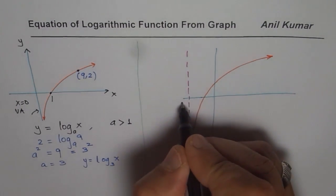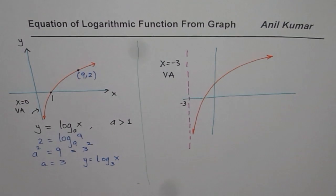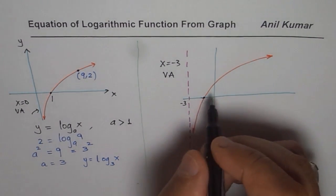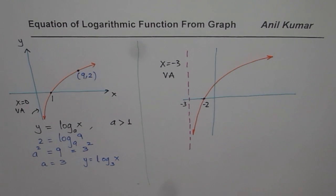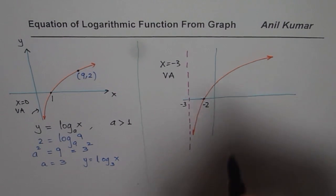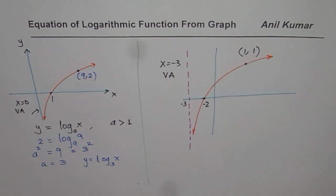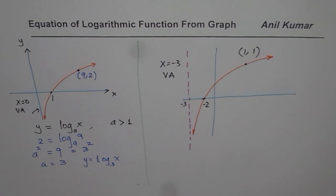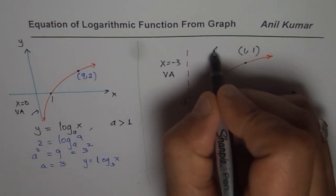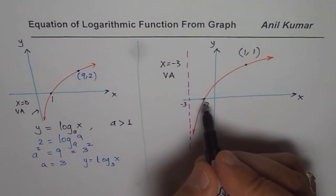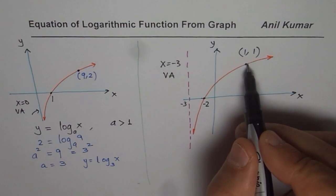Let us say the vertical asymptote is at x equals minus 3 for this particular graph. The x-intercept is at minus 2, and there is an additional point at (1, 1) on the graph. So the final graph has: x-intercept at minus 2, vertical asymptote at minus 3, and the point (1, 1) on the graph.